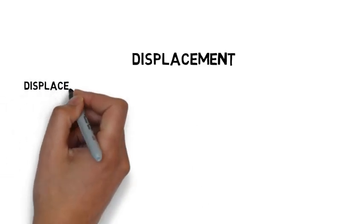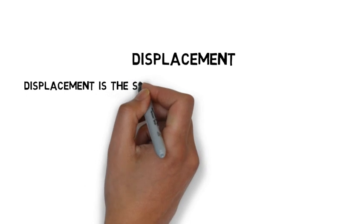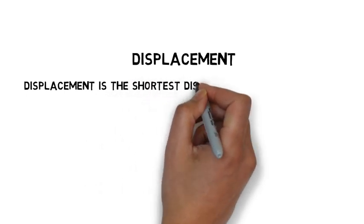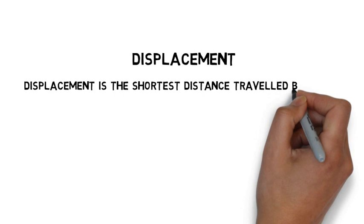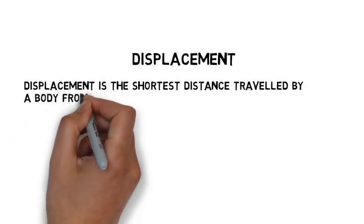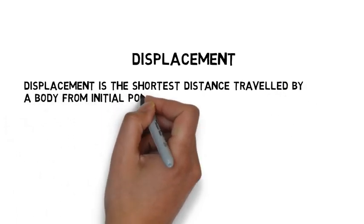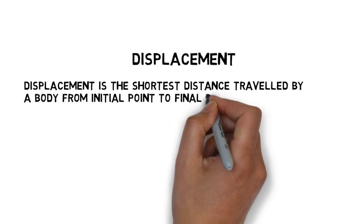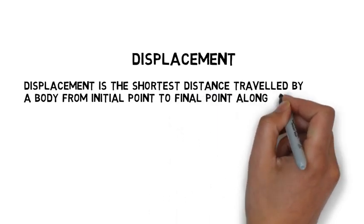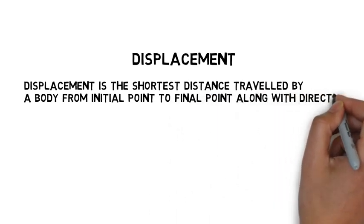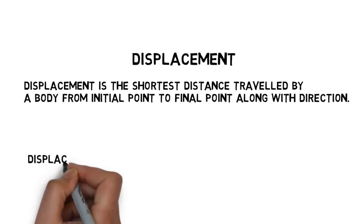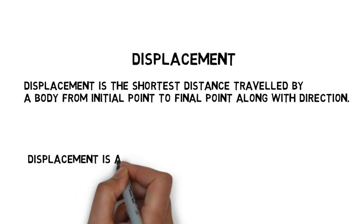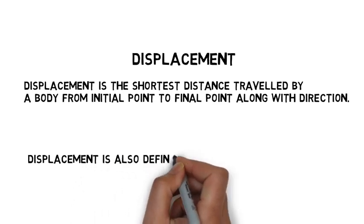Moving on to displacement: displacement is the shortest distance traveled by a body from the initial point to the final point. In the previous example, the vehicle moved from the house to the tree and then to the supermarket — that is not the shortest distance. The shortest distance is always a straight line.